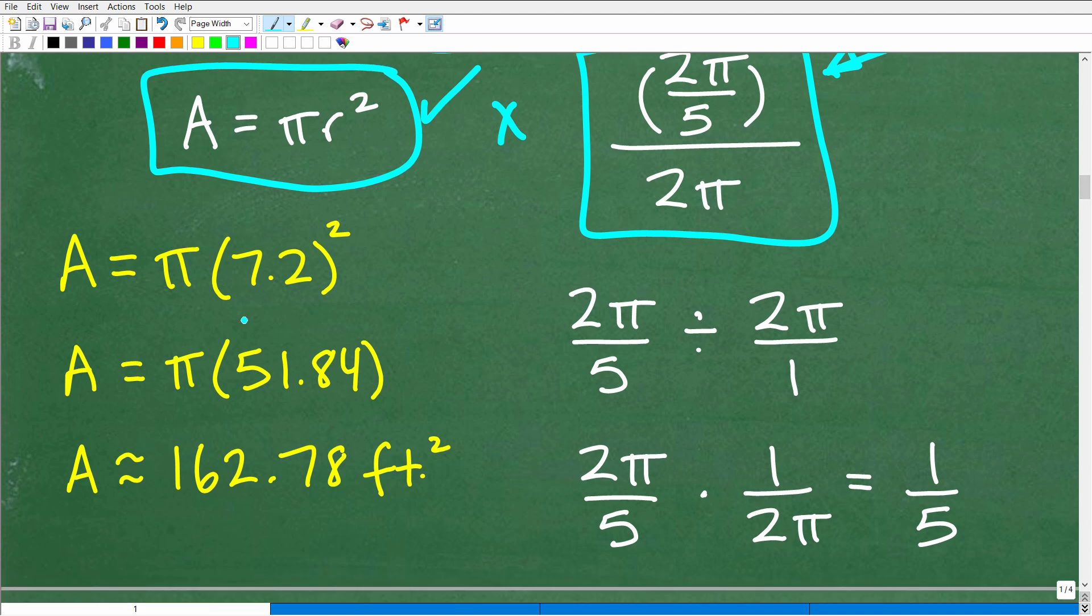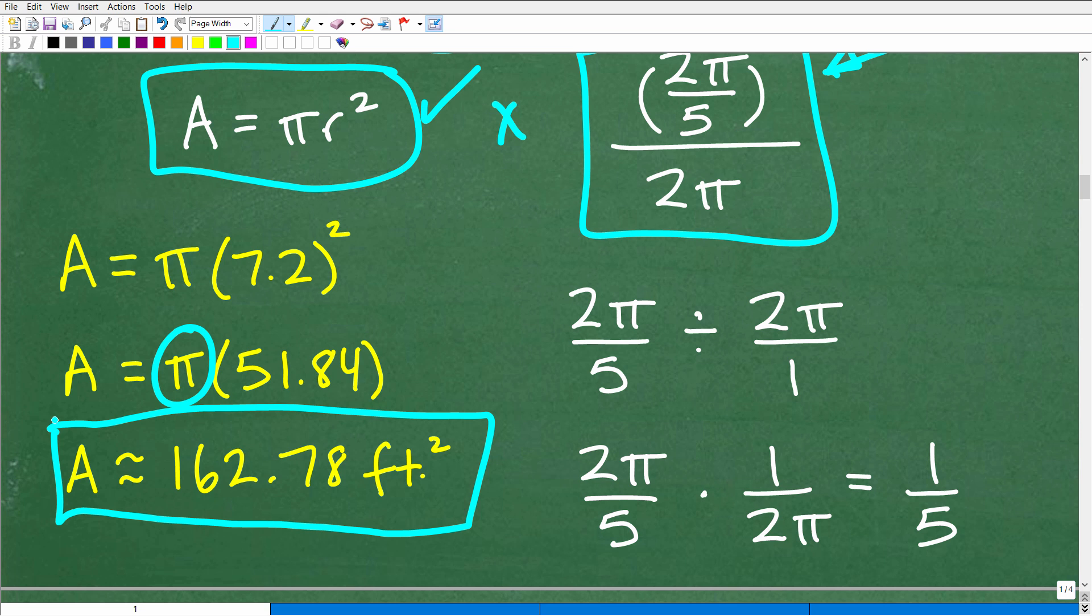Let's take a look at the area real quick here. Area is equal to π times the radius squared, 7.2 squared. 7.2 squared is 51.84 times π. This time, we'll switch out that π, get an approximation. We'll use the decimal value, 3.14. That's very, very rough. So we get the area of the entire complete circle approximately 162.78 feet squared. Remember, the radius was in feet.